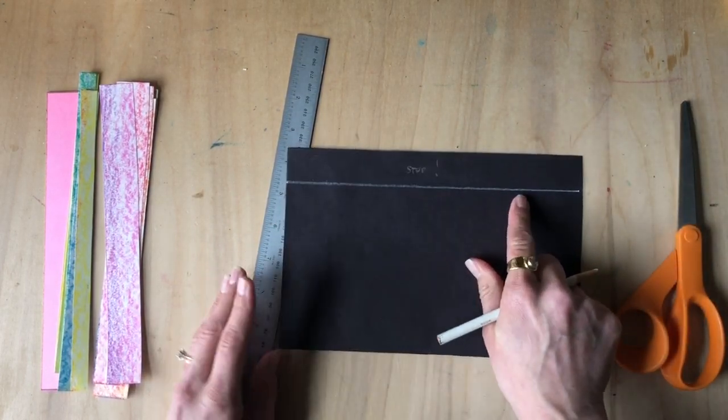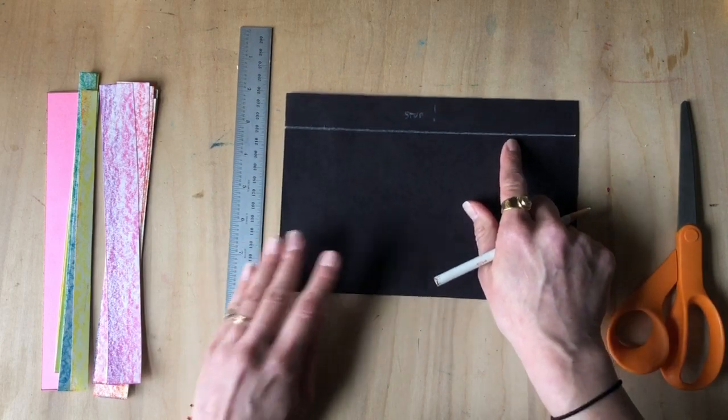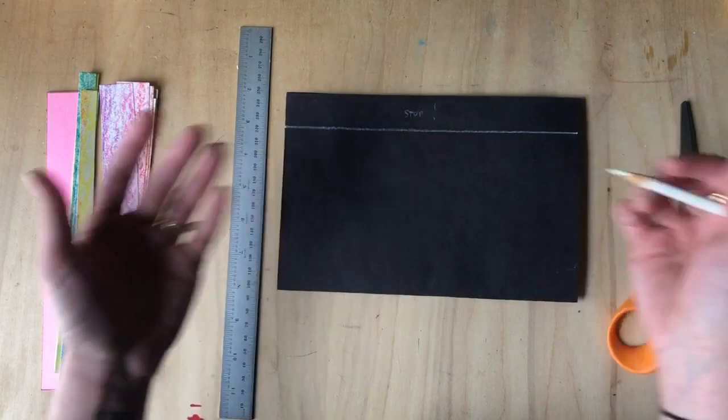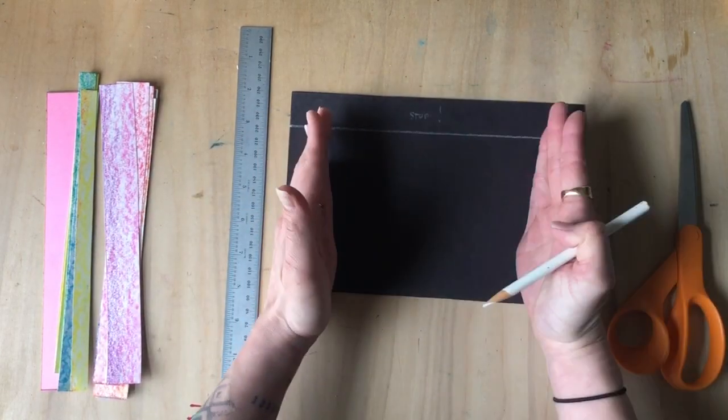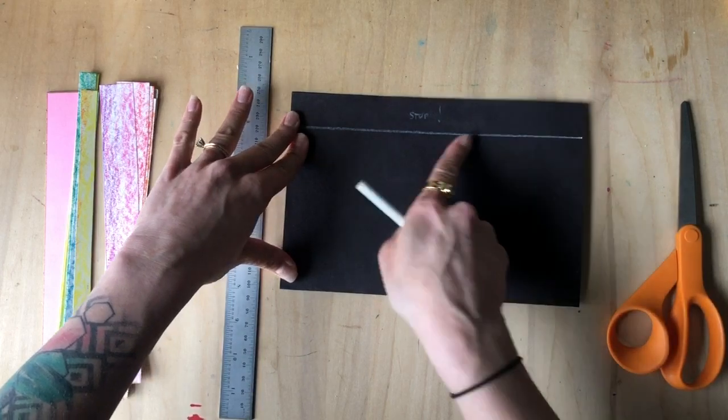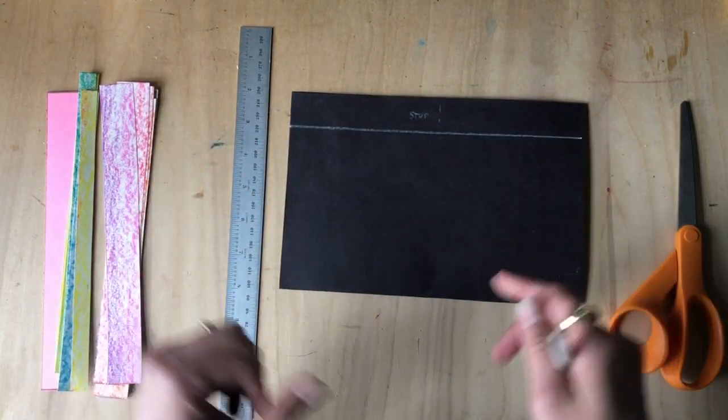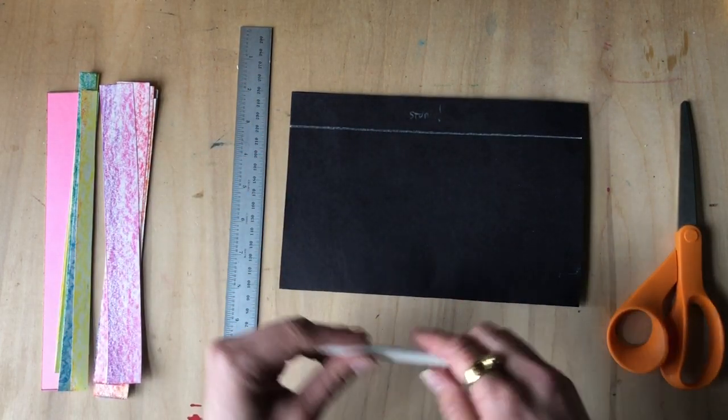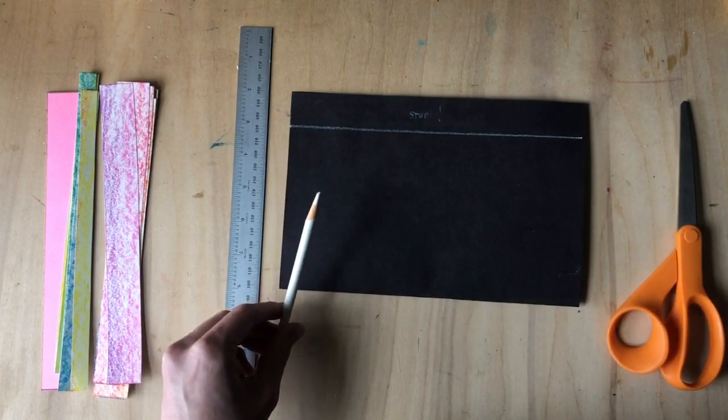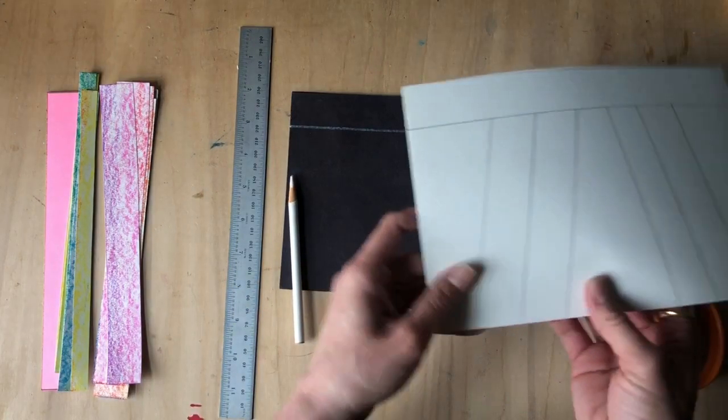And now what I'm gonna do is design different lines instead of using straight ones across. I'm gonna use some diagonal, I might use some curvy - totally up to you. There are so many different patterns and designs you can use. For example, here are a few ideas.